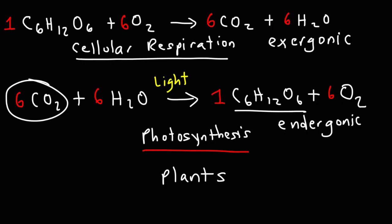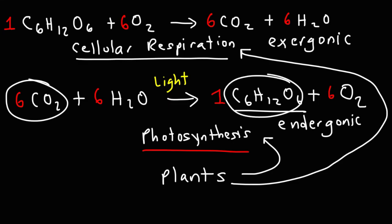Keep in mind, even though plants undergo photosynthesis, at night, they can also undergo cellular respiration. So the glucose that they produce, if they need the energy from that, they can react glucose with oxygen, generating CO2 and water. Plants can transpire water, undergoing cellular respiration, if they need the energy.